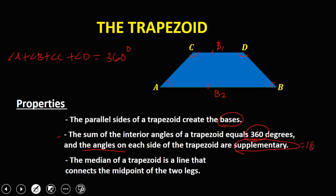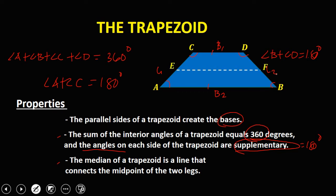The angles on each side of the trapezoid are supplementary, equal to 180 degrees. So angle A plus angle C equals 180 degrees, and angle B plus angle D also equals 180 degrees. The median of a trapezoid is the line that connects the midpoints of the two legs — leg one and leg two — and this line EF is the midsection of the trapezoid.